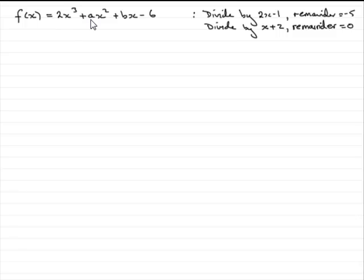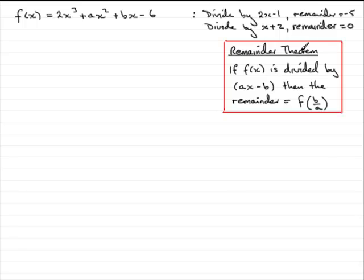So we're asked to find a and b. What we need to remember is something called the remainder theorem and the factor theorem. Here's the remainder theorem: if f of x is divided by ax minus b, then the remainder is equal to f of b over a.